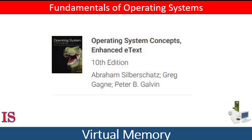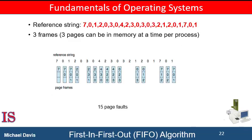So let's continue our study of page replacement policies and pick up where we left off. The simplest page replacement algorithm is a first-in-first-out algorithm. A first-in-first-out replacement algorithm associates with each page the time when that page is brought into memory. When a page must be replaced, the oldest page is chosen. Note that it's not strictly necessary to record the time when a page is brought in — we can simply create a first-in-first-out queue to hold all pages in memory. We replace the page at the head of the queue, and when a page is brought into memory, we insert it at the tail of the queue.